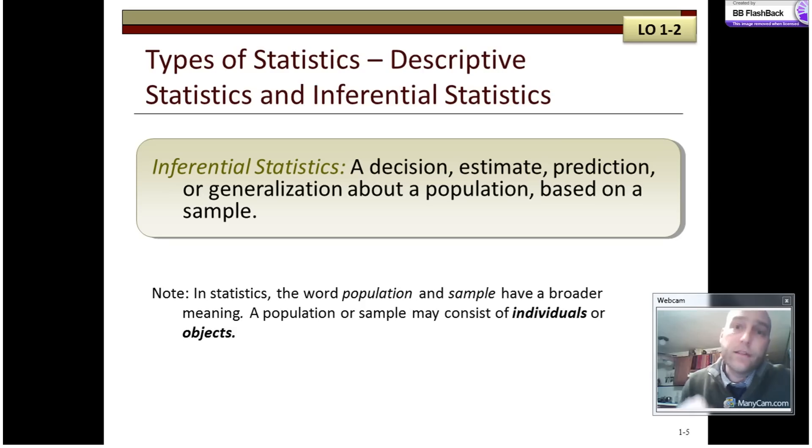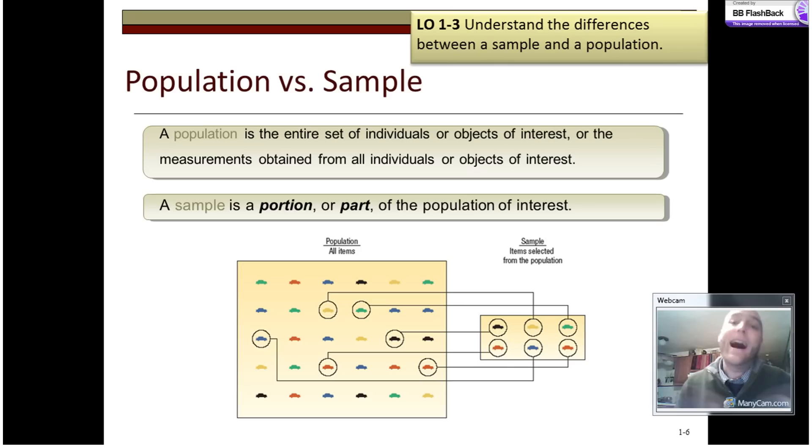And we haven't talked about population and sample. I'll get there in just a second. Because the word population and sample are very specific to statistics. A population is the entire set of individuals or objects of interest. Generally, it's the thing that you're trying to generalize to from a sample. We call sample information statistics, we call population information parameters. Your sample statistic is always your best estimate of your population parameter.